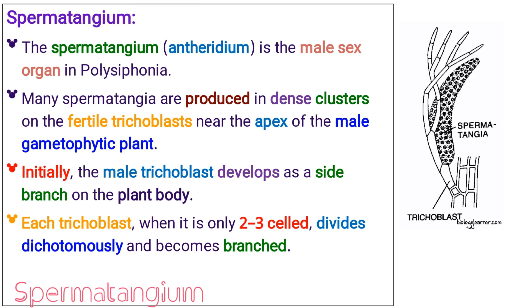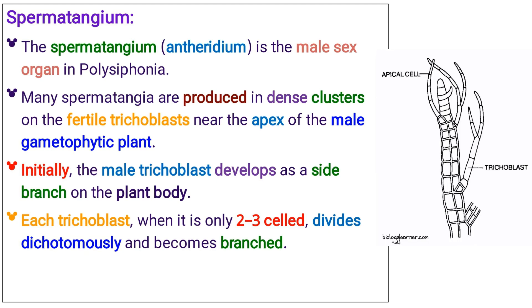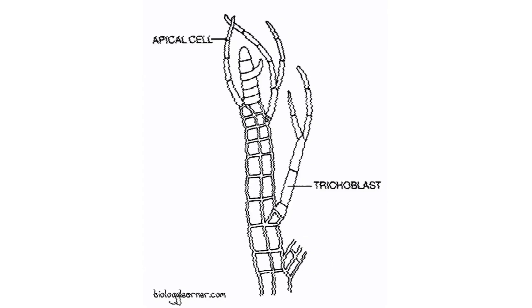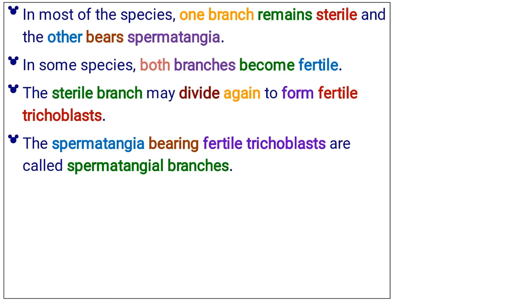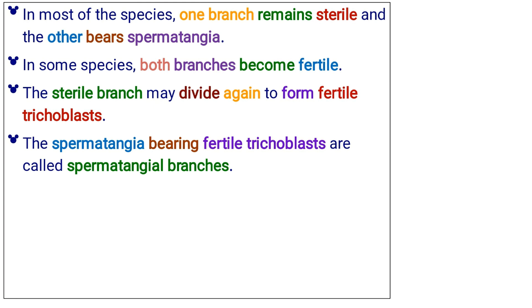The spermatangium, or antheridium, is the male sex organ in Polysiphonia. Many spermatangia are produced in dense clusters on the fertile trichoblasts near the apex of the male gametophytic plant. Initially, the male trichoblast develops as a side branch on the plant body. Each trichoblast, when it is only two to three-celled, divides dichotomously and becomes branched. In most species, one branch remains sterile and the other bears spermatangia. In some species, both branches become fertile. The sterile branch may divide again to form fertile trichoblasts.